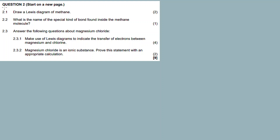Question 2.1: Draw a Lewis diagram of methane. Methane — it's an organic compound, a type of hydrocarbon, and it belongs to a homologous series called alkanes. For now, that's irrelevant — it's a topic for later.